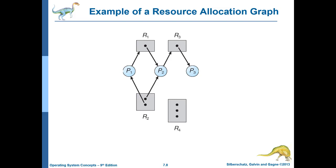In the graph, a process is denoted by a circle and a resource instance by a dot inside a square. An example graph has three processes and four resources: R1 and R3 have one instance each, R2 has two instances, and R4 has three instances. Process P1 has a request edge to R1, meaning it wants R1, while P2 has an assignment edge from R1, meaning P2 is holding R1.